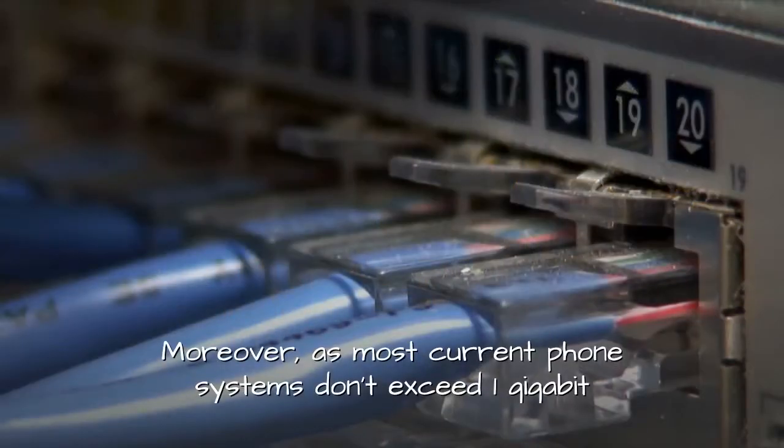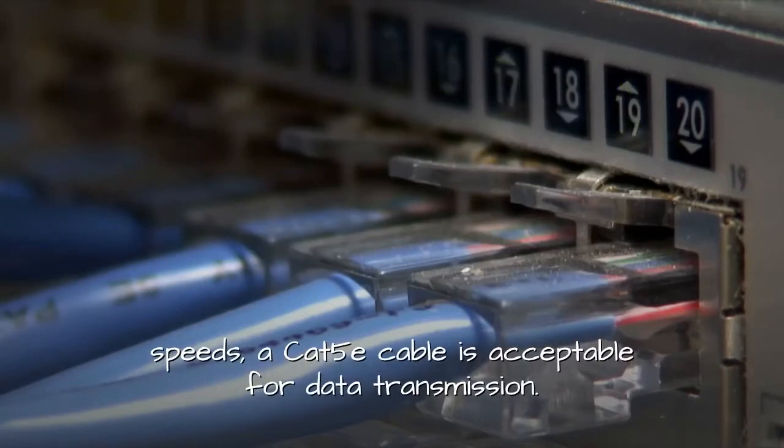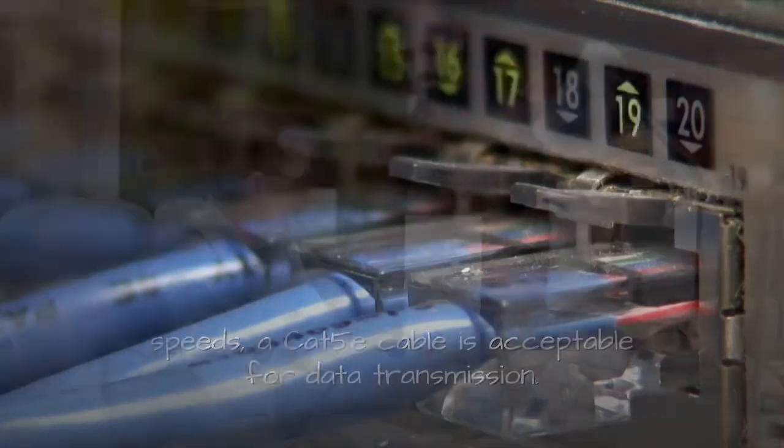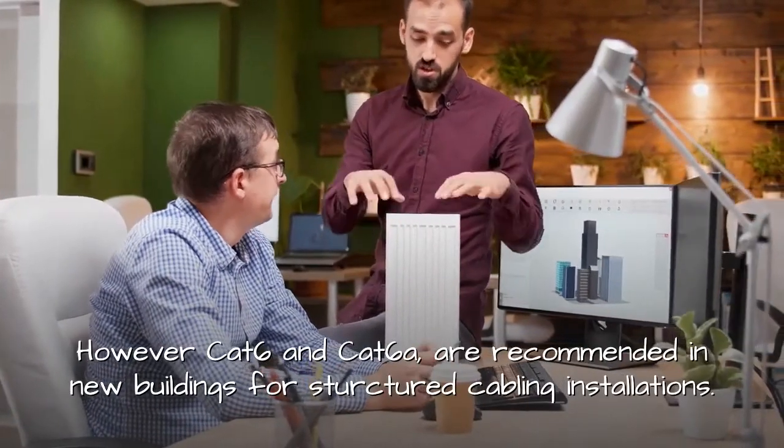Moreover, as most current phone systems don't exceed 1 gigabit speeds, a CAT 5e cable is acceptable for data transmission. However, CAT 6e and CAT 6e are recommended in new buildings for structured cabling installations.